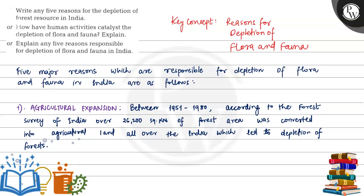Hello, let's see this question. This question says: write any five reasons for the depletion of the forest resources in India, or how have human activities catalyzed the depletion of flora and fauna, or explain any five reasons responsible for depletion of flora and fauna in India. In this question, we will explain five reasons for the depletion of flora and fauna.